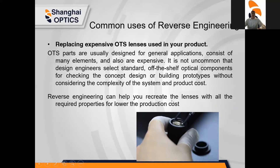Number two: replacing expensive off-the-shelf lenses used in your product. Off-the-shelf parts are usually a great design for general applications, but they consist of many elements and are very expensive. It's not uncommon that design engineers select standard off-the-shelf optical components for checking concept designs or building prototypes without considering the complexity of the system and production costs. Reverse engineering can help recreate those lenses with all the required properties at lower production costs.